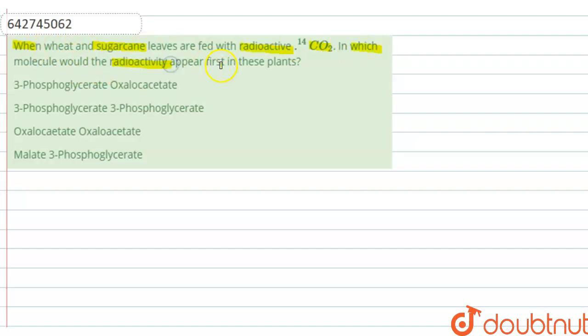The options are: (a) 3-phosphoglycerate and oxaloacetate, (b) 3-phosphoglycerate and 3-phosphoglycerate, (c) oxaloacetate and oxaloacetate, (d) malate and 3-phosphoglycerate. Four options are given according to which radioactive molecule appears first in the given plants.